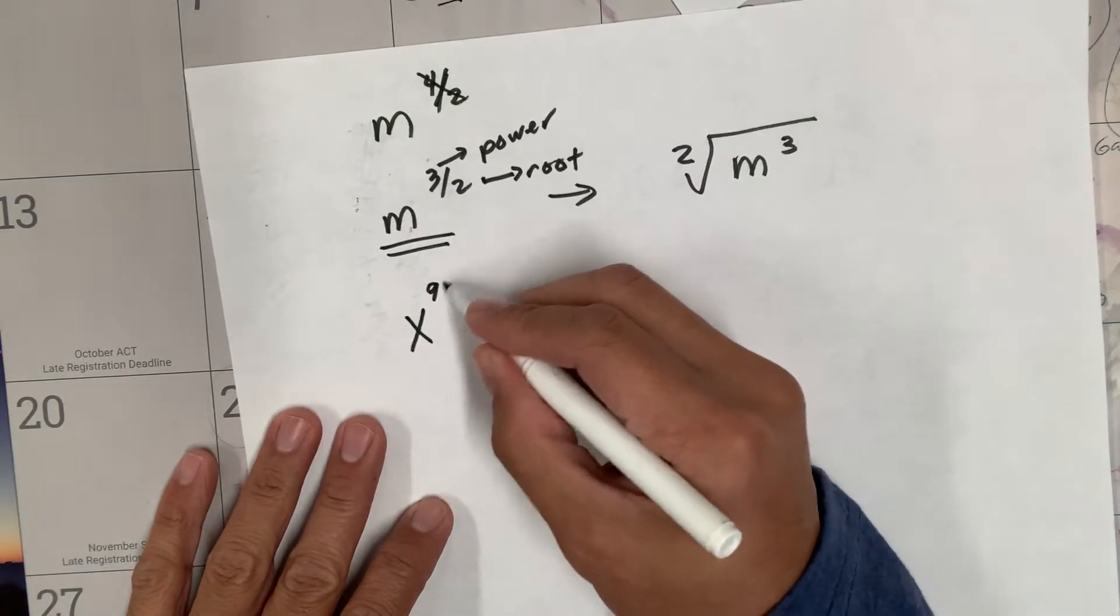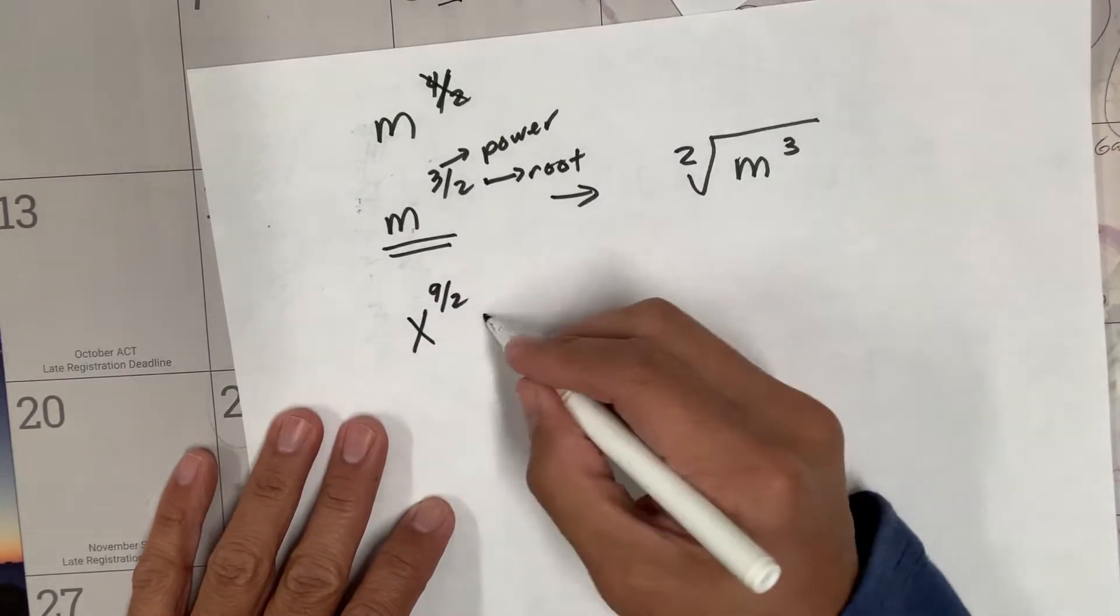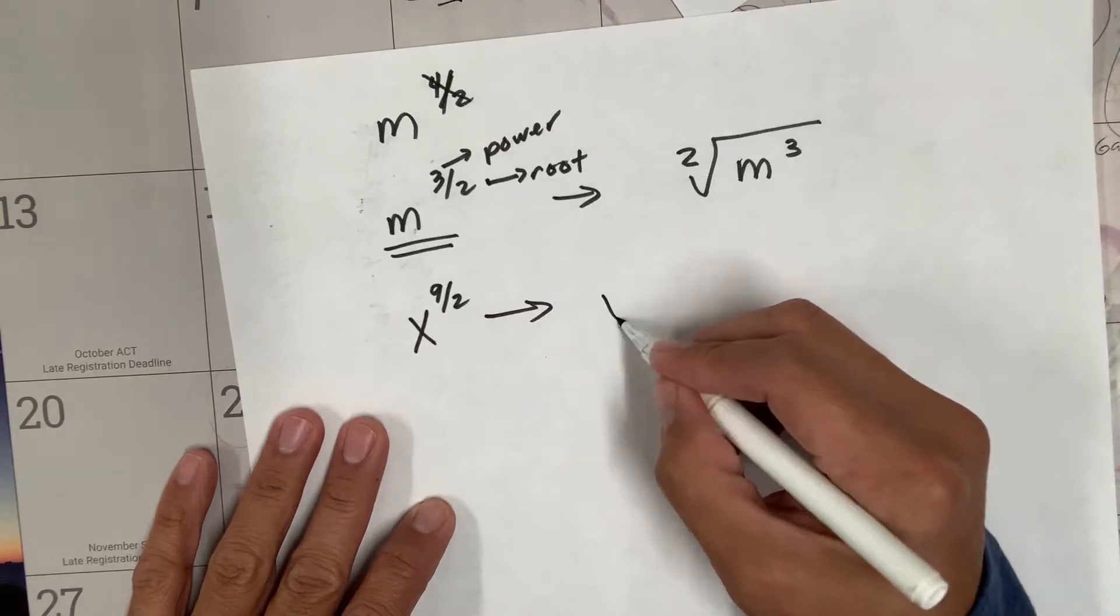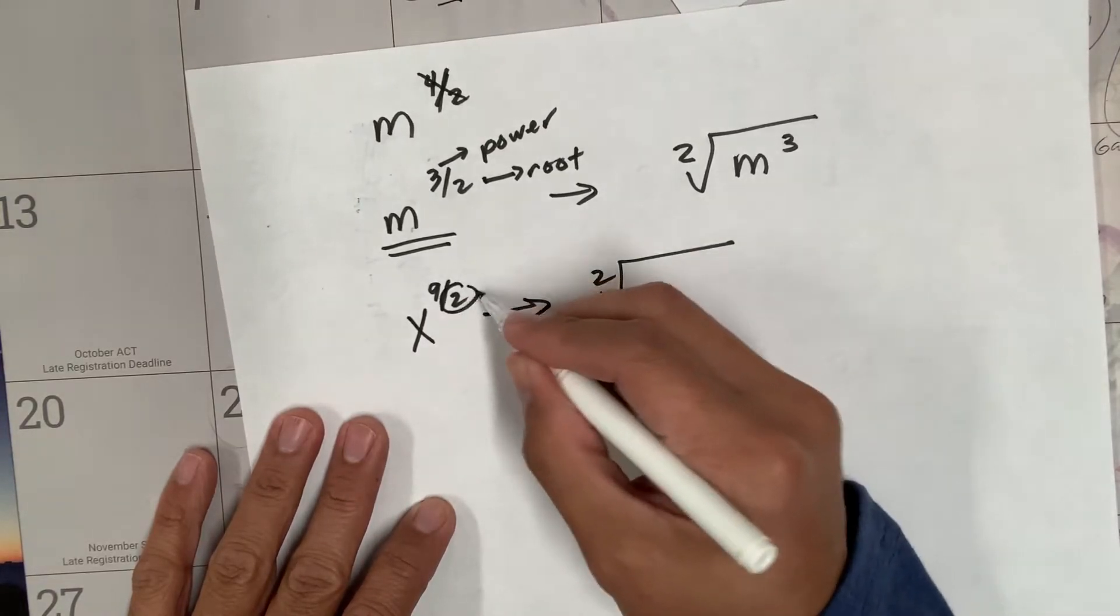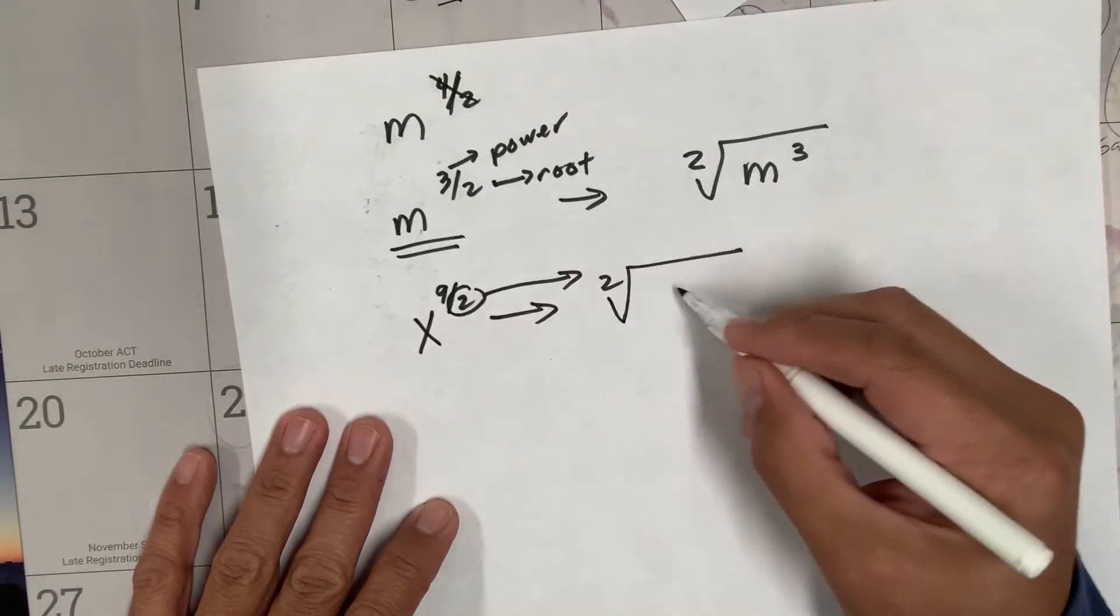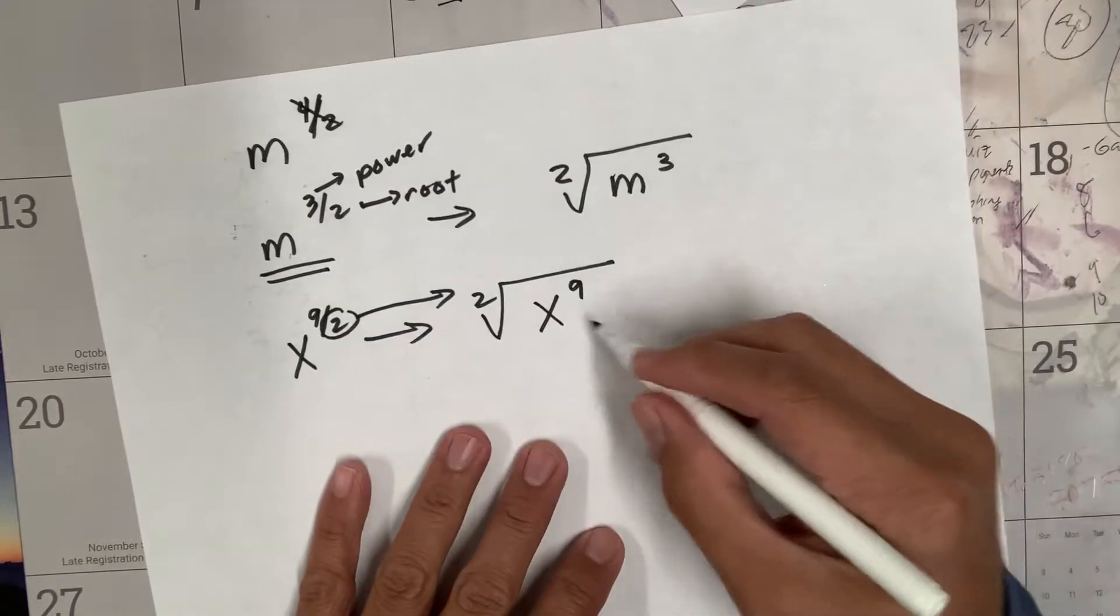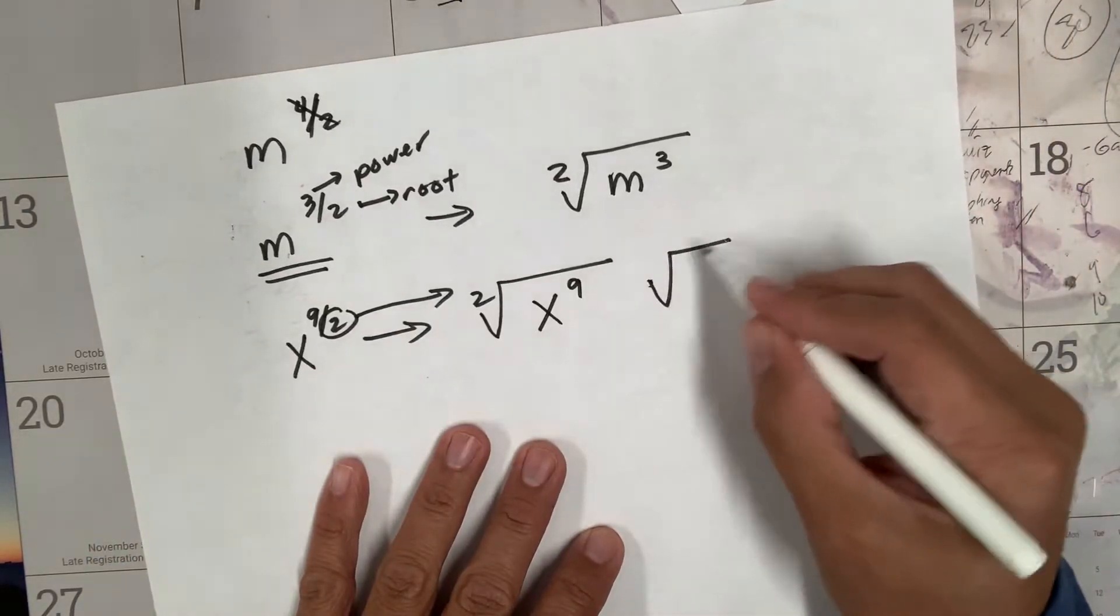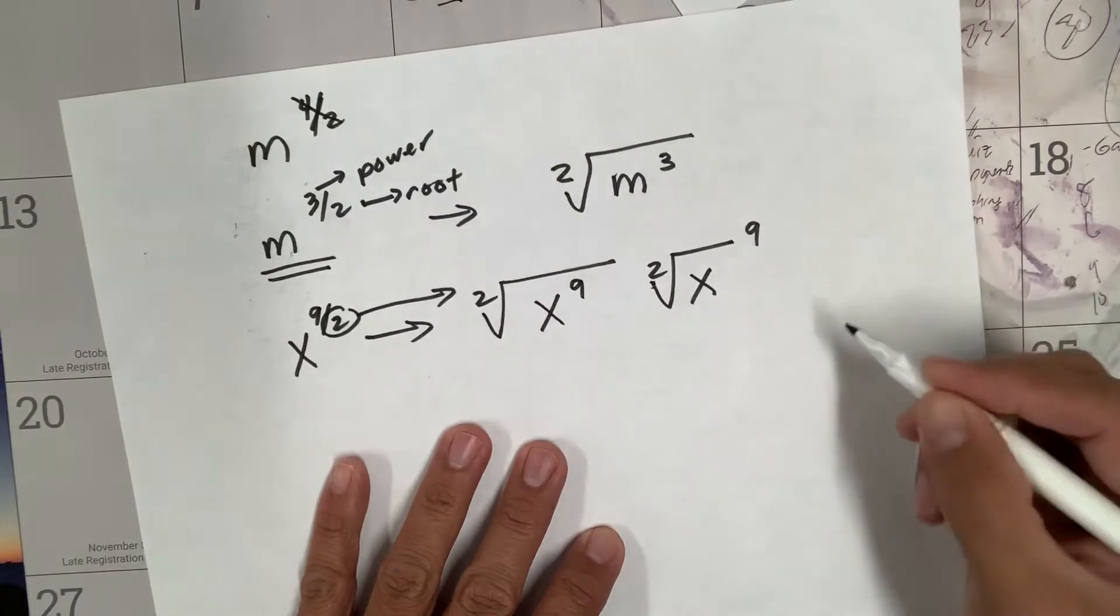You don't need to simplify - we're just rewriting it. So if you have x to the nine-halves, how do you write this in radical form? Square root - the two here goes there and the nine goes with the x. Sometimes you'll see the nine to be outside - this is correct and this is correct.